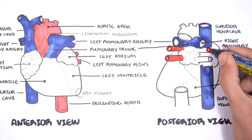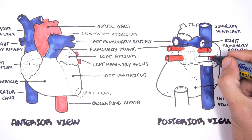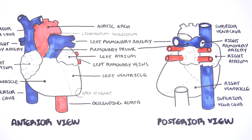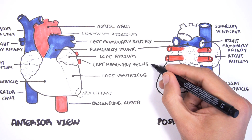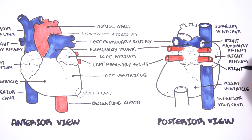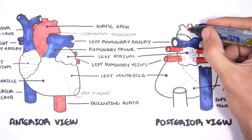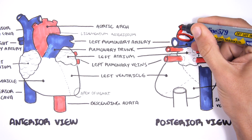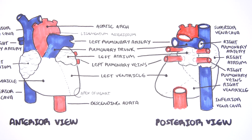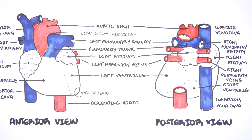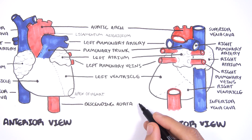The blood goes to the lungs and then returns to the left side of the heart via the left and right pulmonary veins. The pulmonary veins enter the left atrium, which then goes to the left ventricle, pumping this blood up the aorta. Here's your aortic arch, and blood can be pumped up to the upper body or down through the descending aorta.